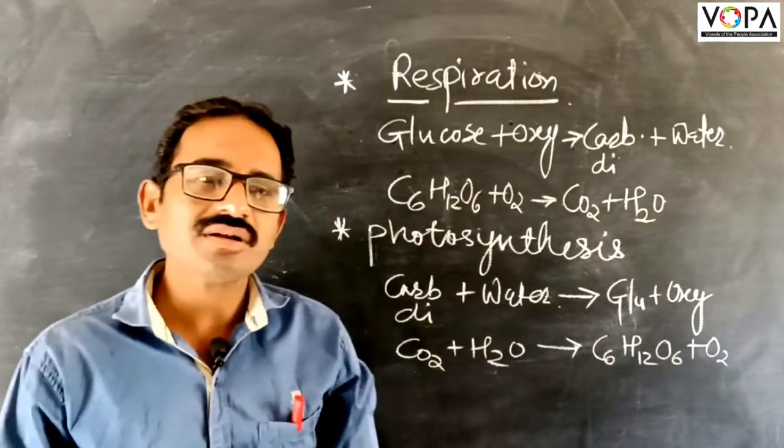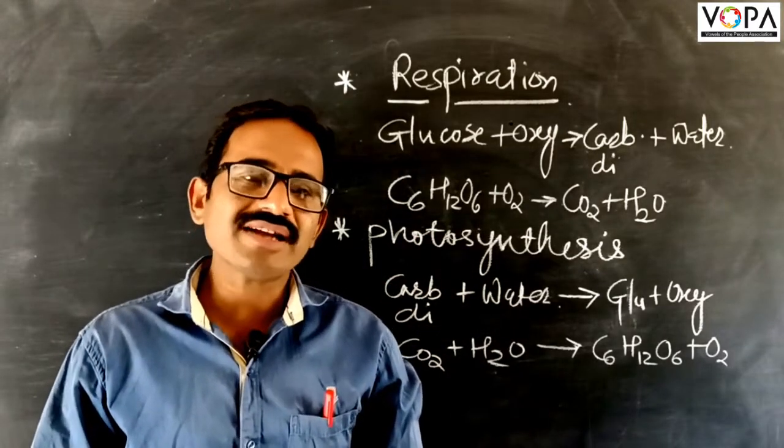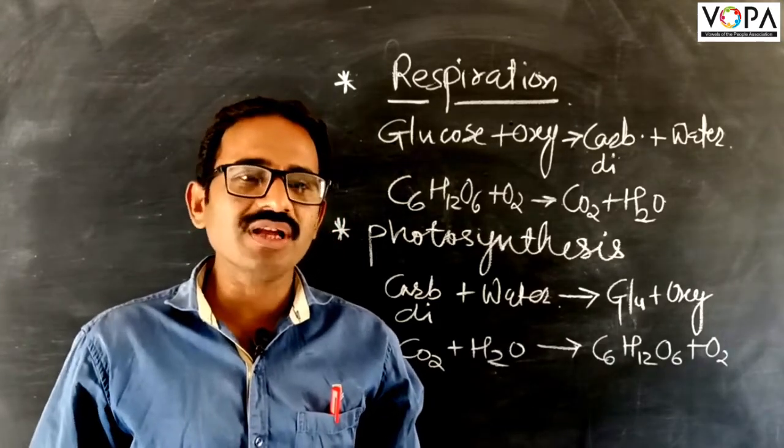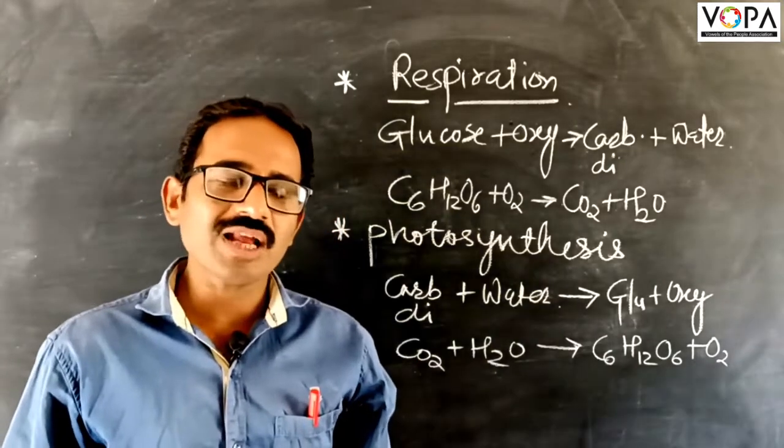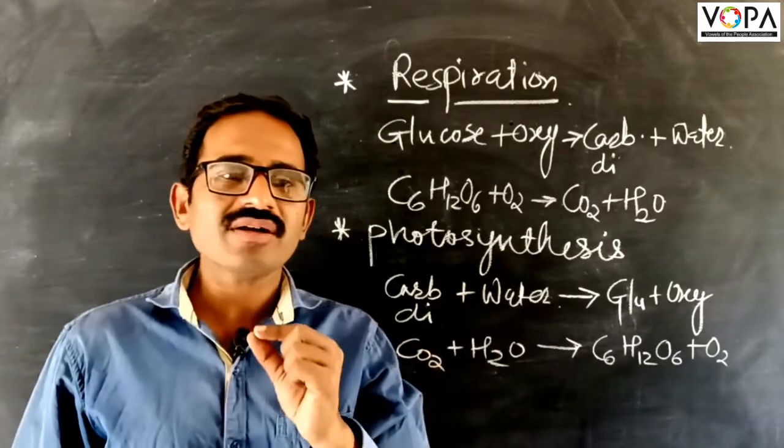Now, another natural chemical process is photosynthesis. You know that the green trees prepare their own food in presence of sunlight. With the help of carbon dioxide, they prepare their food. It is called photosynthesis.